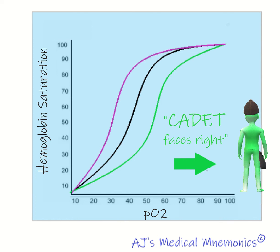These five conditions represent the conditions which the oxygen-hemoglobin curve is going to be shifted to the right. C stands for carbon dioxide — CO2. When there's CO2 around, that shifts the curve to the right. A is for acid, also known as low pH. D stands for 2,3-DPG, which liberates oxygen from hemoglobin. And E is for exercise.